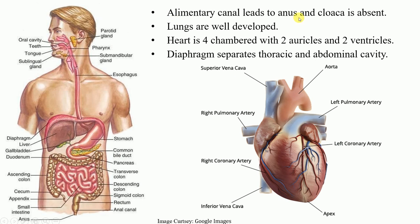The alimentary canal leads to the anus, and a cloaca is absent. The cloaca is a common opening for the digestive, urinary, and reproductive systems found in other organisms such as fishes. Among mammals, the anus is always present as a separate opening for the digestive system, while separate orifices exist for the reproductive and urinary systems. The digestive system starts with the mouth, leads into a long alimentary canal — particularly long in herbivores and short in carnivores — and ends at the anus.